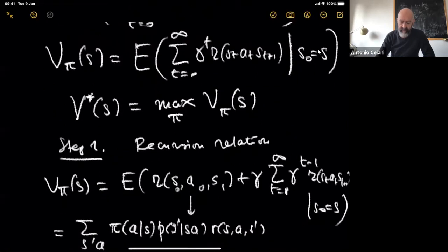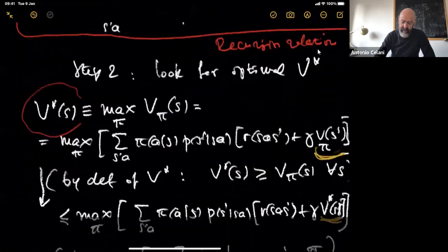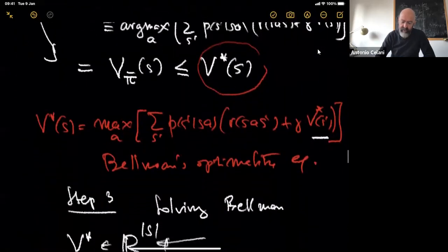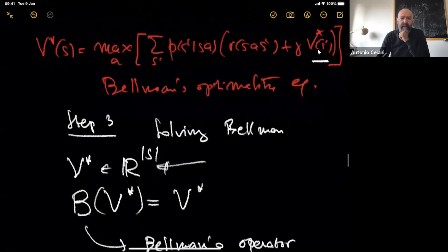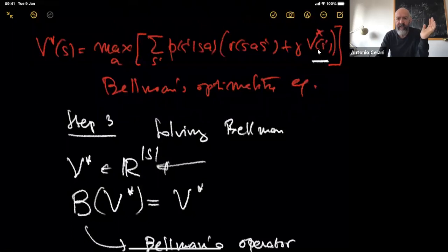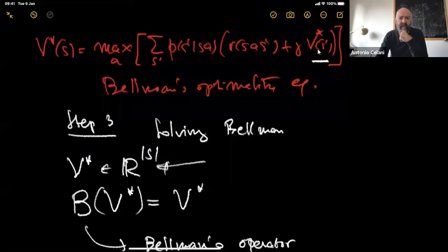Given that objective, we introduced the value function shown at the top of the screen, then asked for maximization. After a set of manipulations — mostly formal inequalities — we ended up with Bellman's optimality equation. We then face the question of how to solve it. Since we deal with a finite discrete set of states, our optimal value function v* is a vector with components v*(s) for each state of the system.